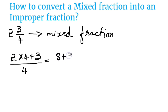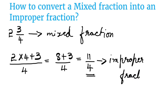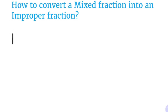Multiplying 2 into 4 becomes 8, plus 3, by 4 is equal to 11 by 4. This is an improper fraction. So this is the method of converting a mixed fraction into an improper fraction — the denominator will be the same, only the numerator will change. Multiply the whole number with the denominator and add the numerator.